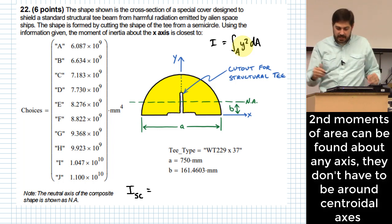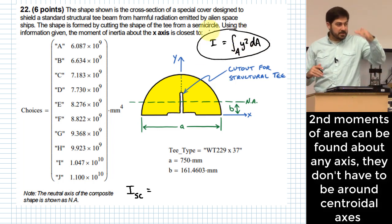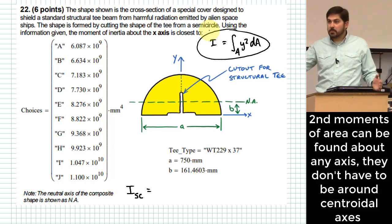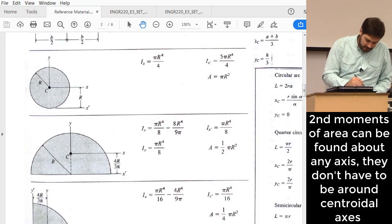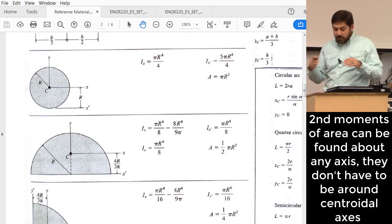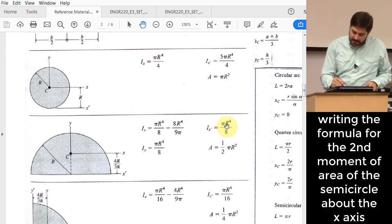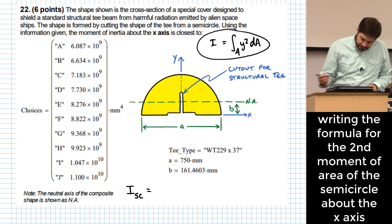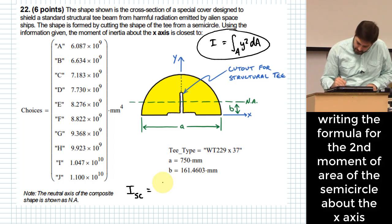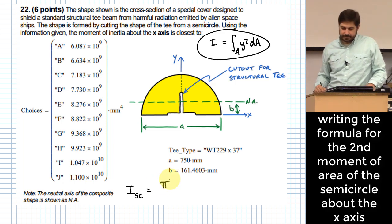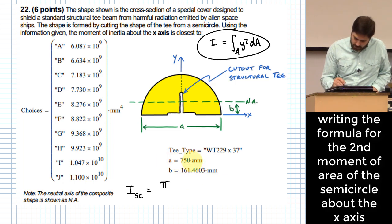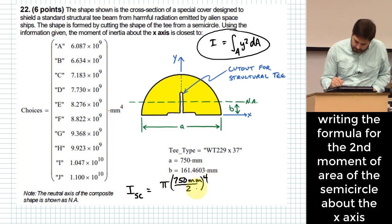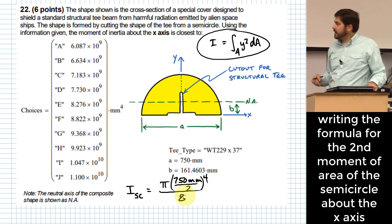But there's nothing that keeps us in a formula like this from centering it somewhere else. And that's what it is around those other axes. So if I want to figure out for our shape around the x prime axis as opposed to the centroidal axis, I just take this pi r to the fourth over eight. What's the radius? 750 millimeters over two. So that part's easy.